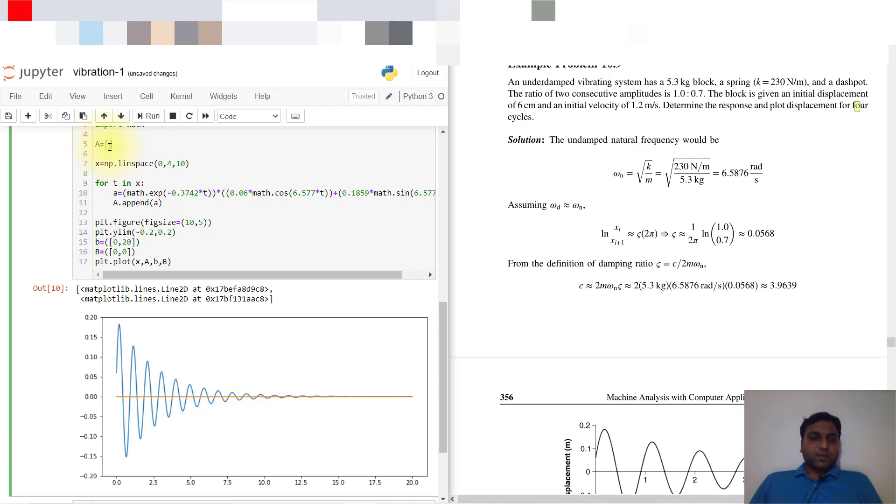It will divide into 10 values in array a, so the x versus a graph will be 10 by 10. The plotting size is 10 by 5. My y-limit is minus 2 to 2. This b value is not required actually.